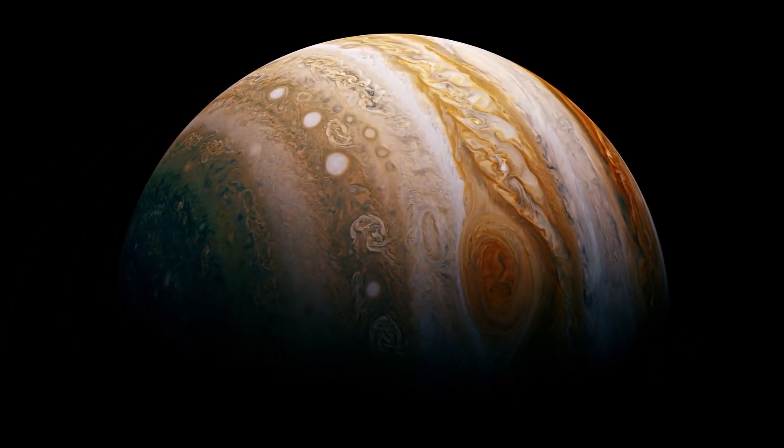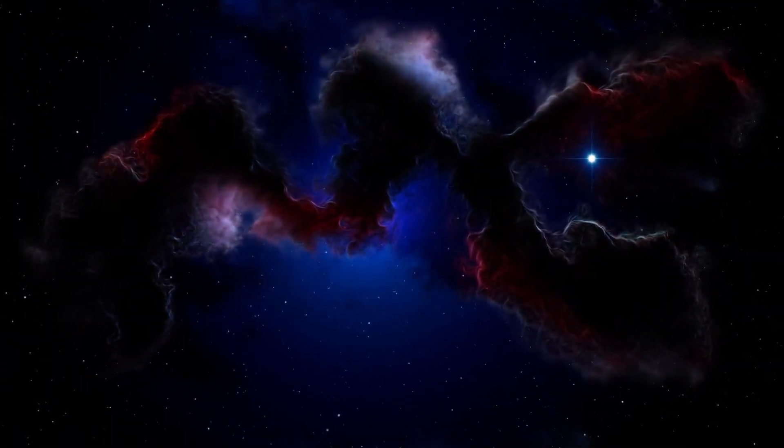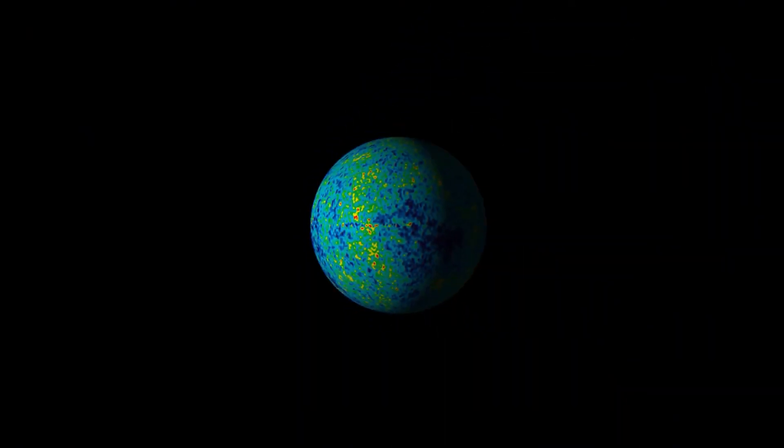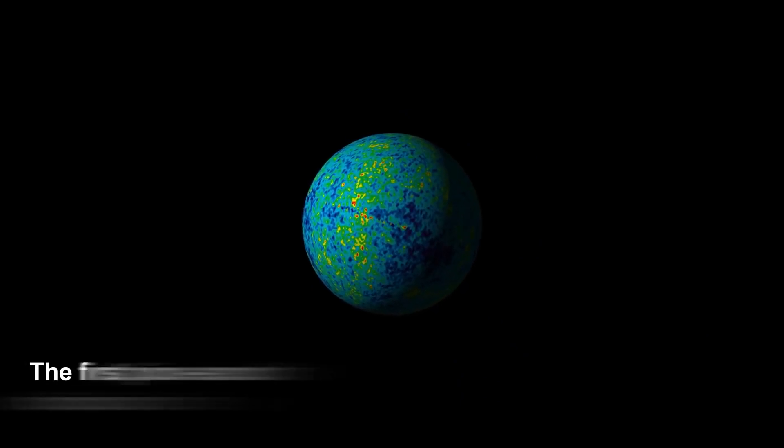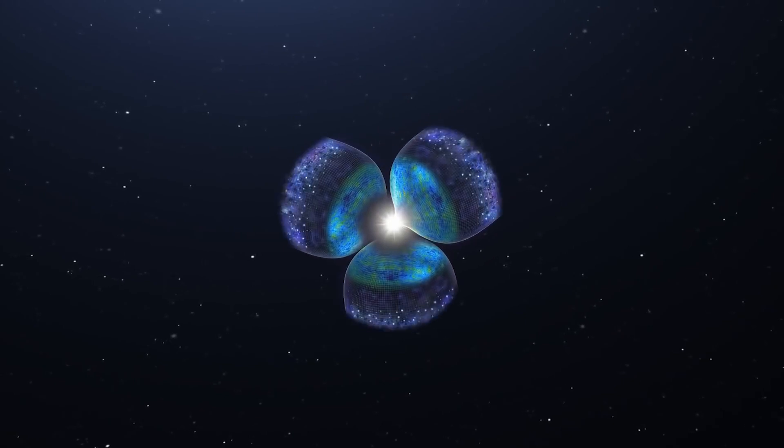Instead of a black hole, the Milky Way could have a core of dark matter. The current scientific consensus holds that our galaxy is home to a supermassive black hole. We know this is true in other galaxies. In M87, there is even photographic evidence of a black hole. A new study, however, suggests that the Milky Way may not have a black hole.